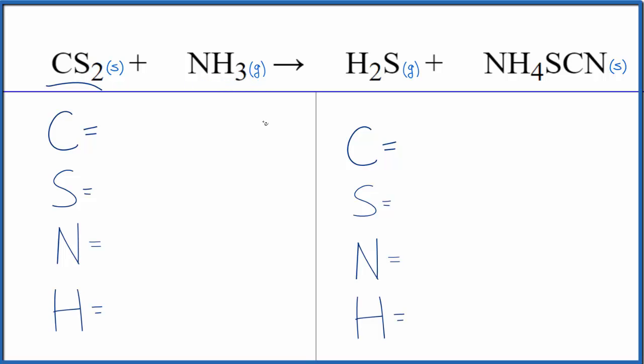To balance the equation let's first count the atoms up on each side. We have one carbon, two sulfur atoms, one nitrogen and three hydrogens.